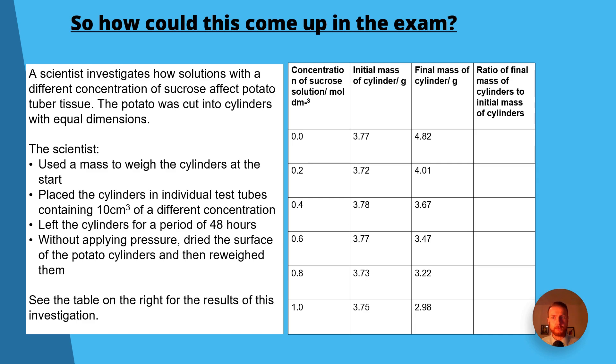Okay guys, now it's time for those tricky practical questions. Now be warned, these are going to be difficult, but I'm on hand to help you with these, so stay tuned. You need to be prepared for this because this is a required practical and it has come up in the past. So in this example, a scientist investigates how solutions with a different concentration of sucrose affect potato tuber tissue. The potato was cut into cylinders with equal dimensions. The scientist used a mass to weigh the cylinders at the start, placed the cylinders in individual test tubes containing 10 centimeters cubed of a different concentration, left the cylinders for a period of 48 hours, then without applying pressure, patting, dried the surface of the potato cylinders and then re-weighed them. See the table on the right hand for the results of this investigation.